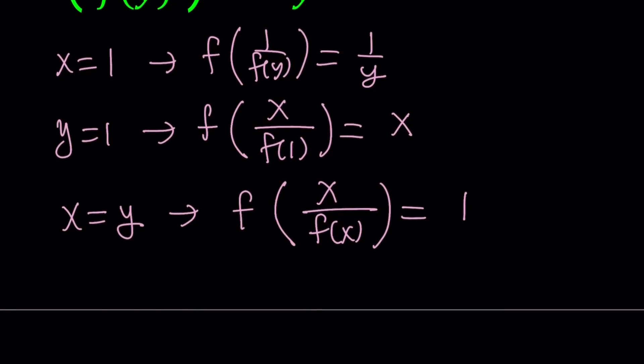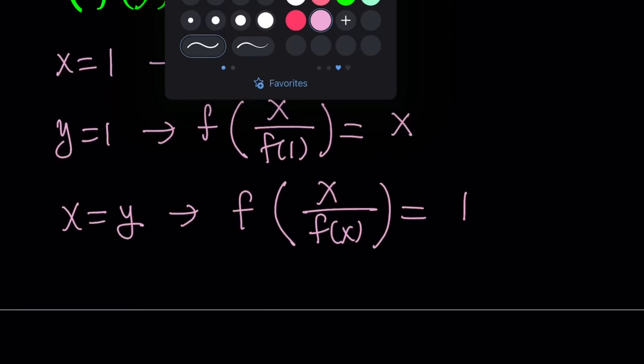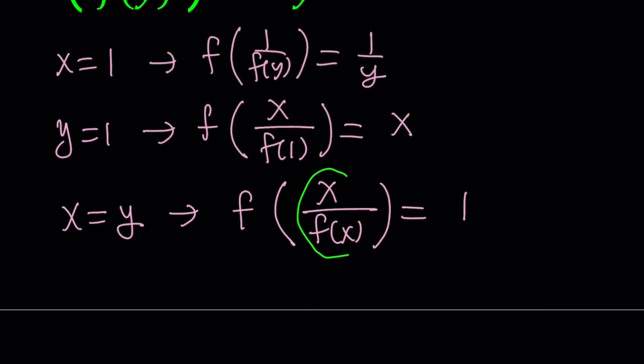Wait. How is that possible? Well, f of variable equals 1. Yes, it's only possible either f is a constant function, which we can kind of test, or the expression inside the parentheses must be a constant, which is quite possible. So here is the first thought. This must be a constant. Let's set it equal to what? K. Okay.